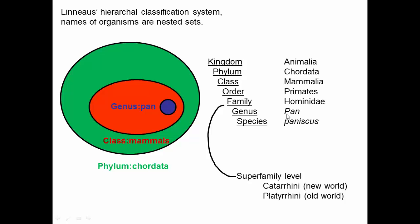For example, if you were going to specify the name of regular chimpanzees, it has a kingdom, a phylum, a class, an order, a family, a genus, and a species — each nested within the one above it. That was how Linnaeus named things and how nature seemed to be organized. There are also additional levels like superfamilies and infra-orders, such as new world and old world primates sitting between the order Primates and the family Hominidae.